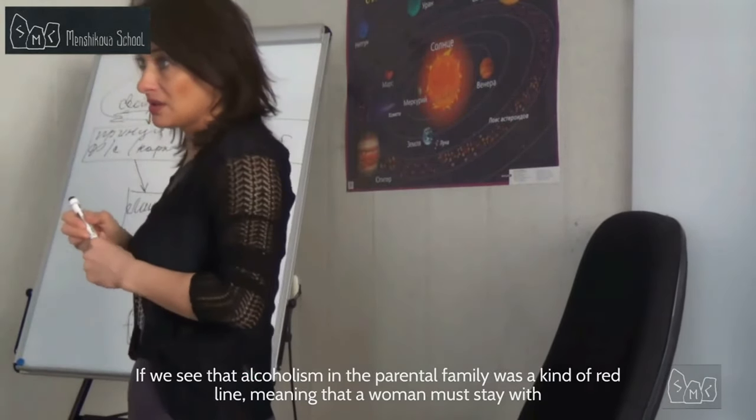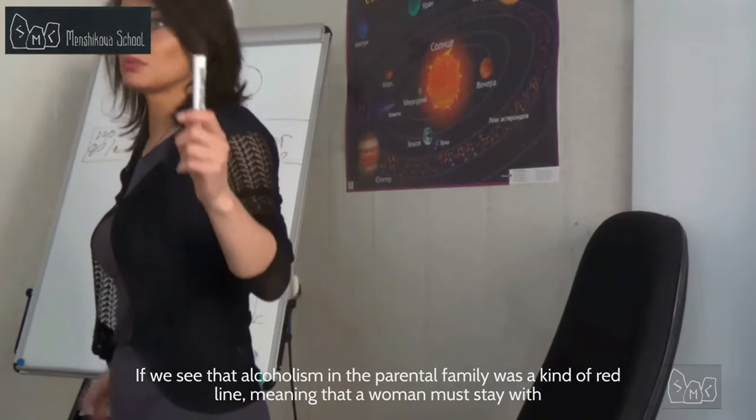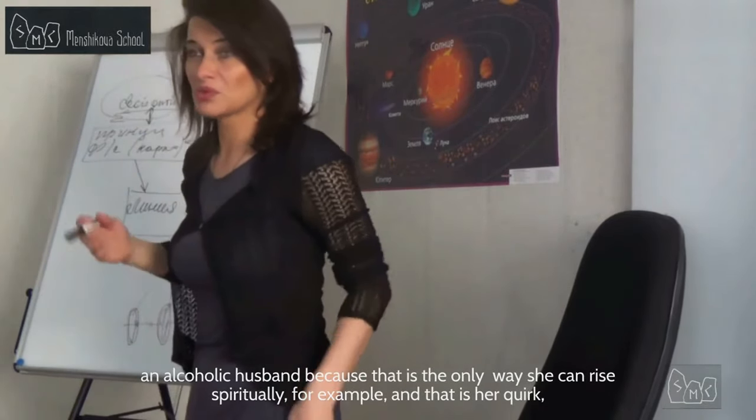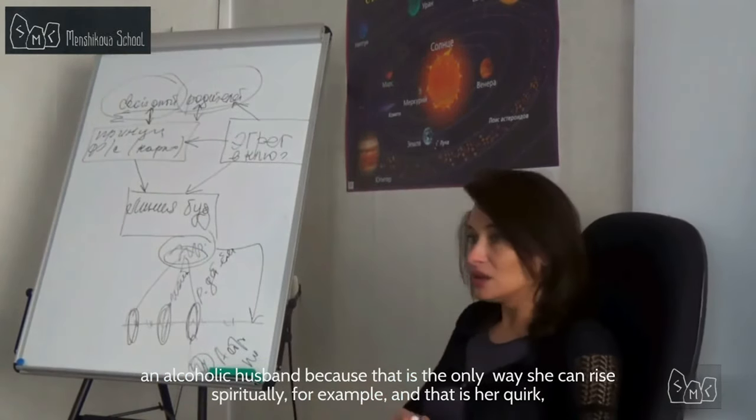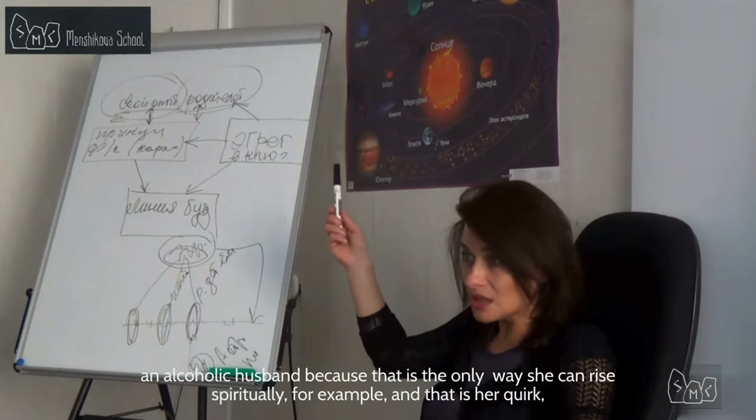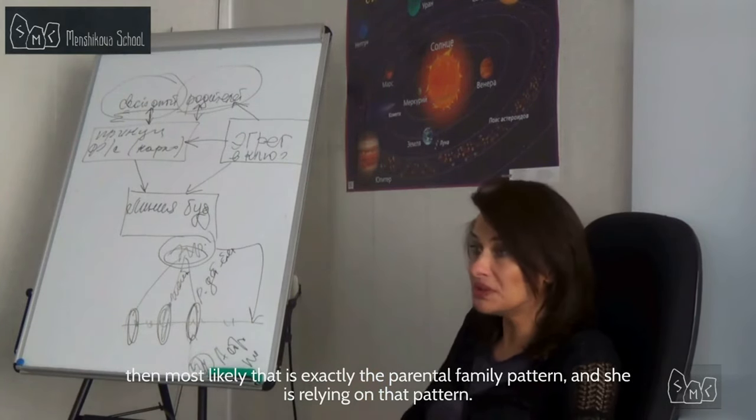If we see that alcoholism in the parental family was a kind of red line, meaning that a woman must stay with an alcoholic husband because that is the only way she can rise spiritually, for example, and that is her quirk, then most likely that is exactly the parental family pattern and she is relying on that pattern.